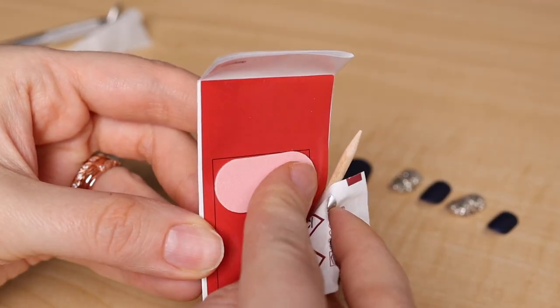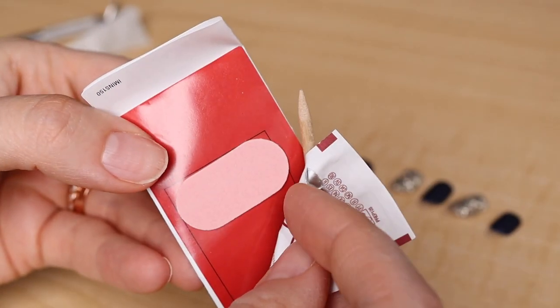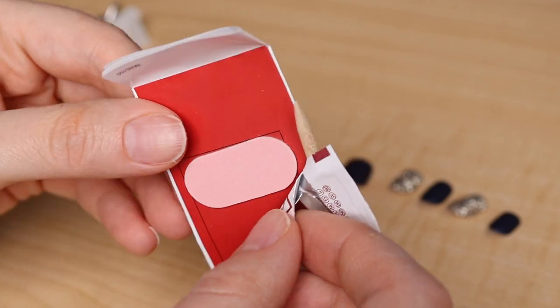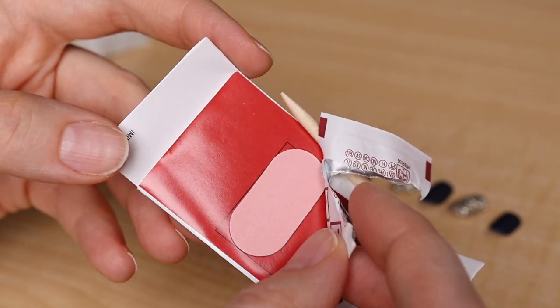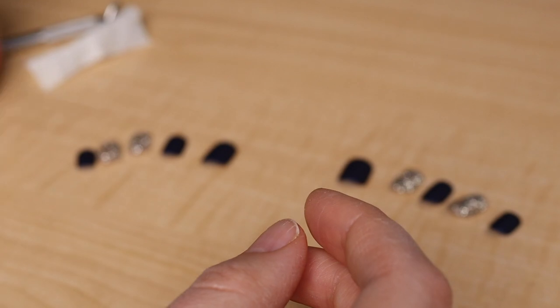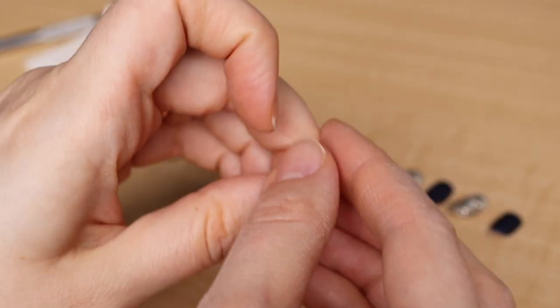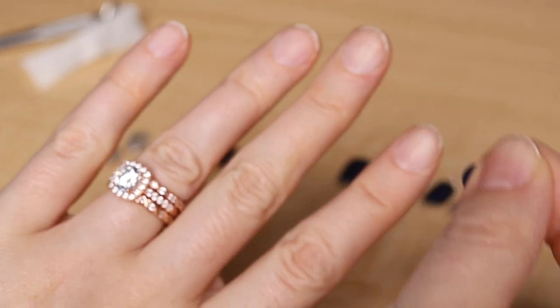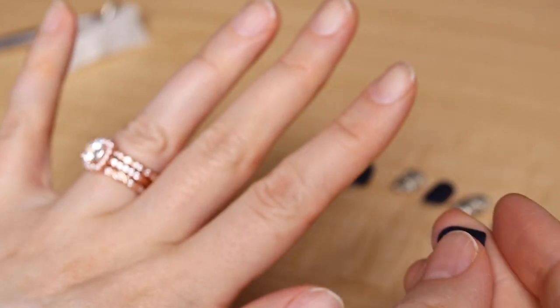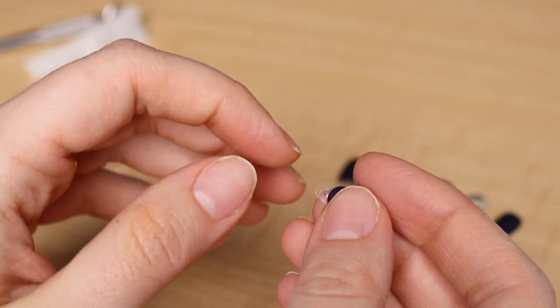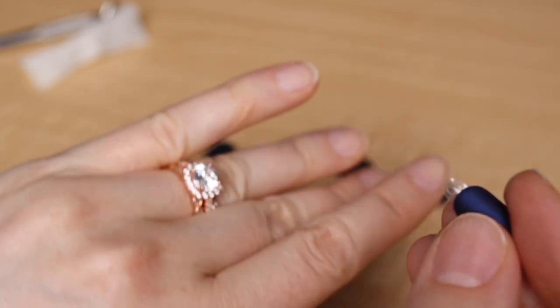We do get a little nail file in here, which is mostly useless. I will show you in a second why they include it. I start from the pinky toward here because I tend to use my index finger and my thumb in the application process. So I do those last.